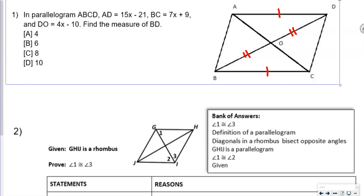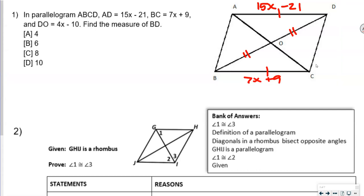AD is 15x minus 21 and BC is 7x plus 9. We're going to set these equal to each other because they are congruent. Once we find X, we'll plug that value back into DO. DO is 4x minus 10, and because DO and BO are congruent, 4x minus 10 appears on both sides. So we can do 2 times (4x minus 10). But first we're going to solve for X.